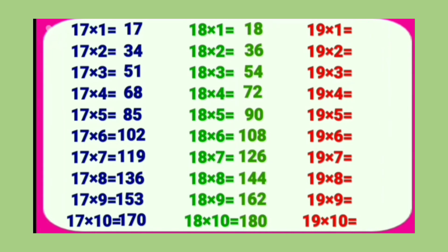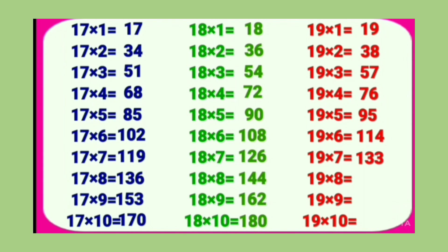Table of 19: 19 1's are 19, 19 2's are 38, 19 3's are 57, 19 4's are 76, 19 5's are 95, 19 6's are 114, 19 7's are 133, 19 8's are 152, 19 9's are 171, 19 10's are 190.